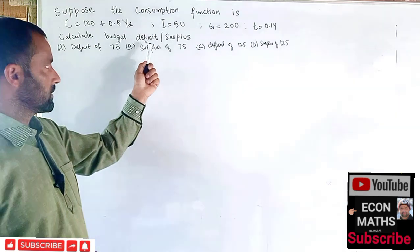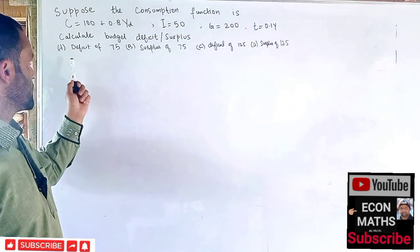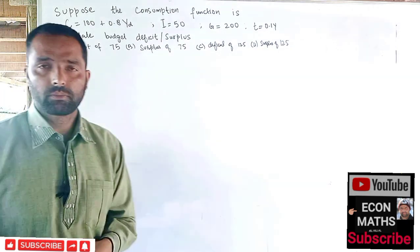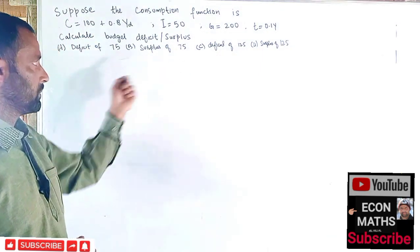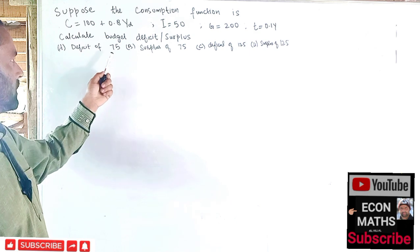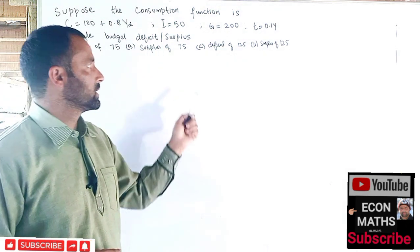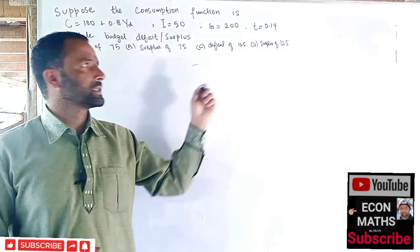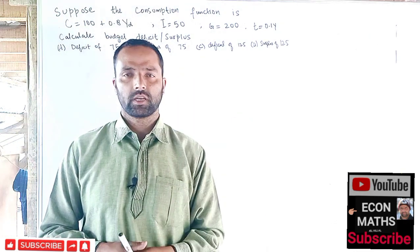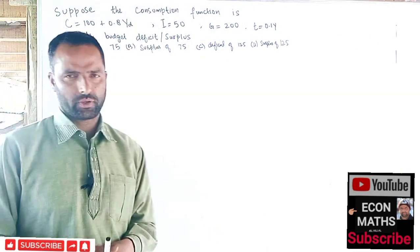The question tells us to calculate the budget deficit or surplus. The multiple choice options are: first, a deficit of 75; second, a surplus of 75; third, a deficit of 125; and last, a surplus of 125.